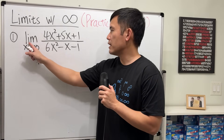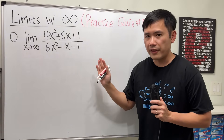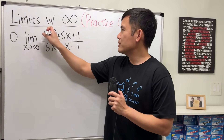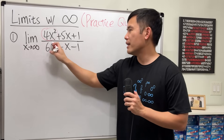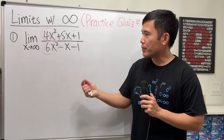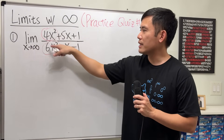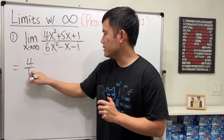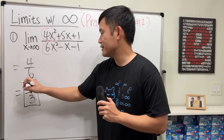For the first one, we have the limit as x approaching infinity of a rational function. This is something you definitely do not want to get wrong. All we have to do is pick up the biggest power from the top and likewise from the bottom, and compare them. They have the same degree — x to the second power — so they cancel. All you have to do is look at the coefficients: 4 over 6, which reduces to 2/3. And we're done.